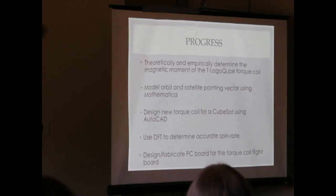So, progress so far. First thing I did was to theoretically and empirically measure the magnetic dipole moment of the T-Logo cube satellite. That's the old one. And also extrapolate and try to figure out theoretical values for the new TRL-6 or spin cube satellite that we'll be launching soon. Another aspect of this project was modeling the orbit of the satellite and making sure that we could actually see what we expected the torquing effects to be by modeling the torque coil and the spinning in space, which I'll show a little bit later on.